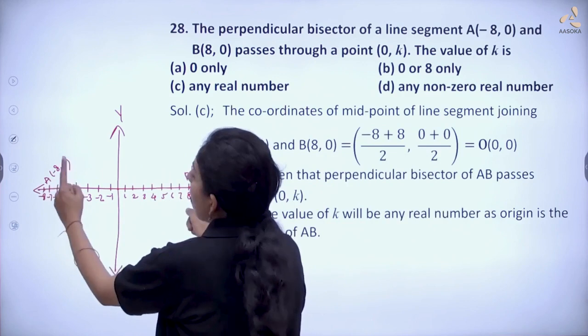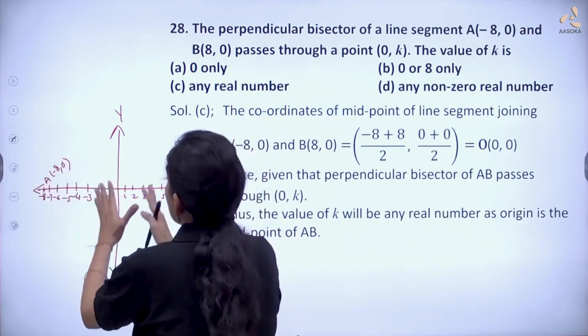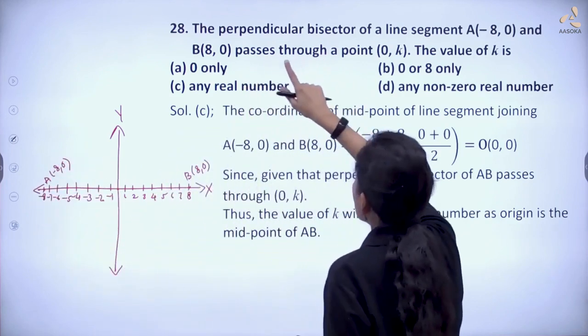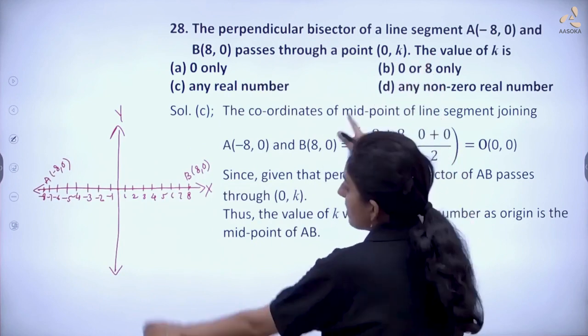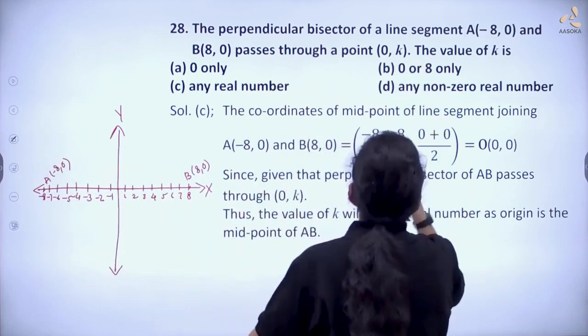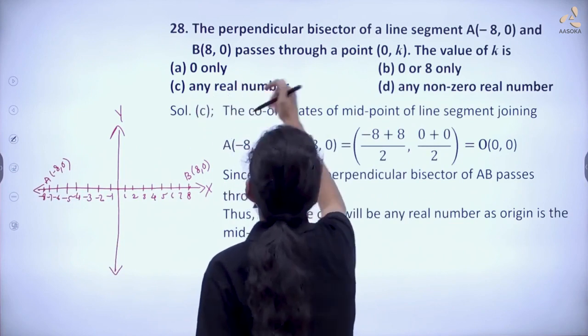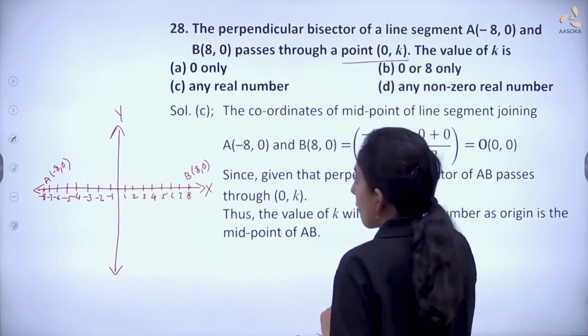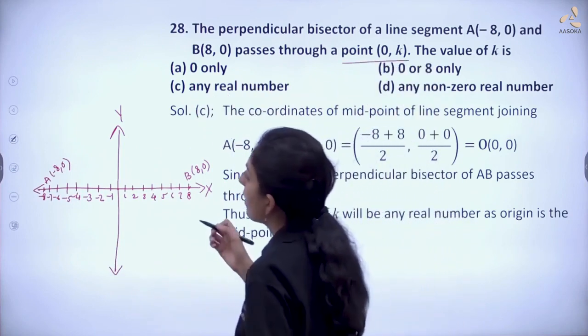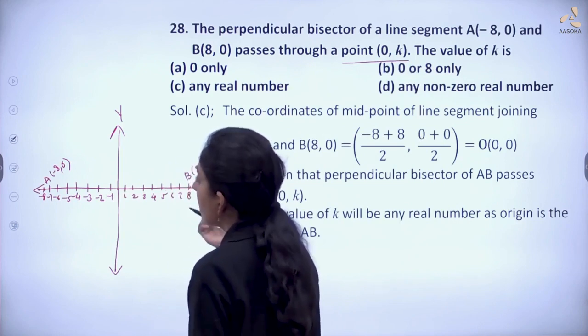And we are given the line segment. This is what happens—this is perpendicular bisector, this line segment. It is perpendicular bisector. It passes through a point (0, k).